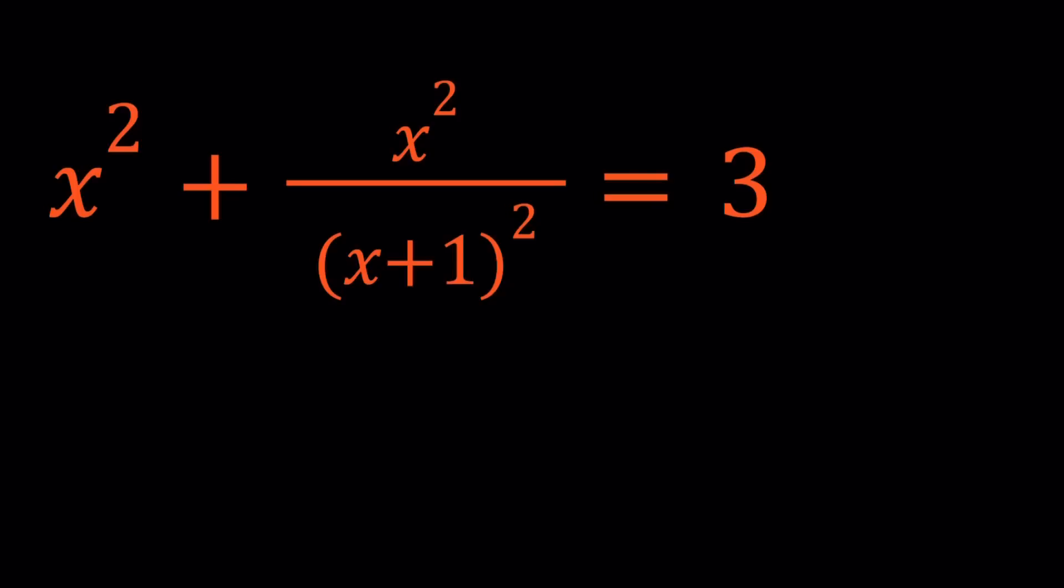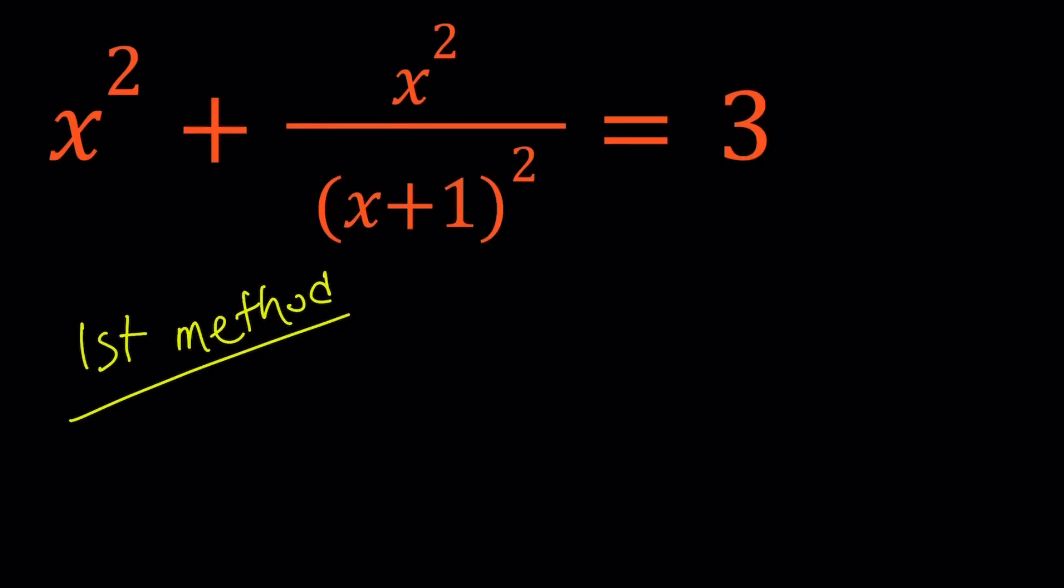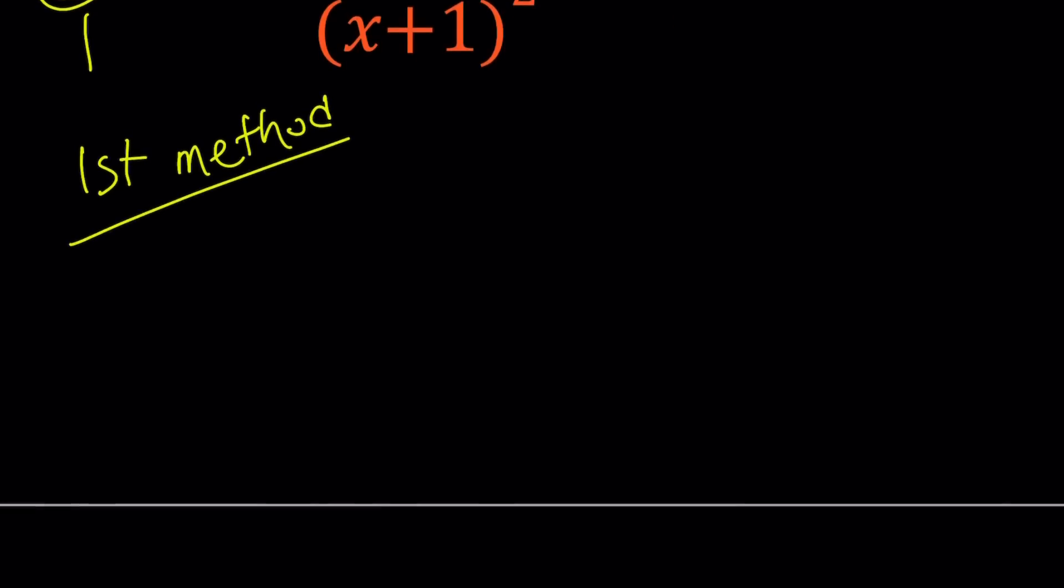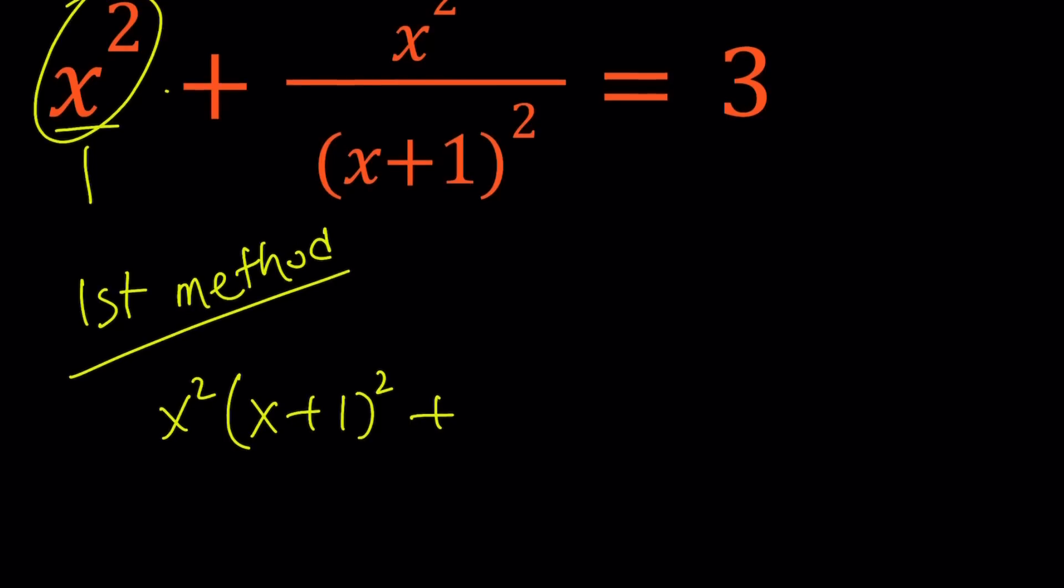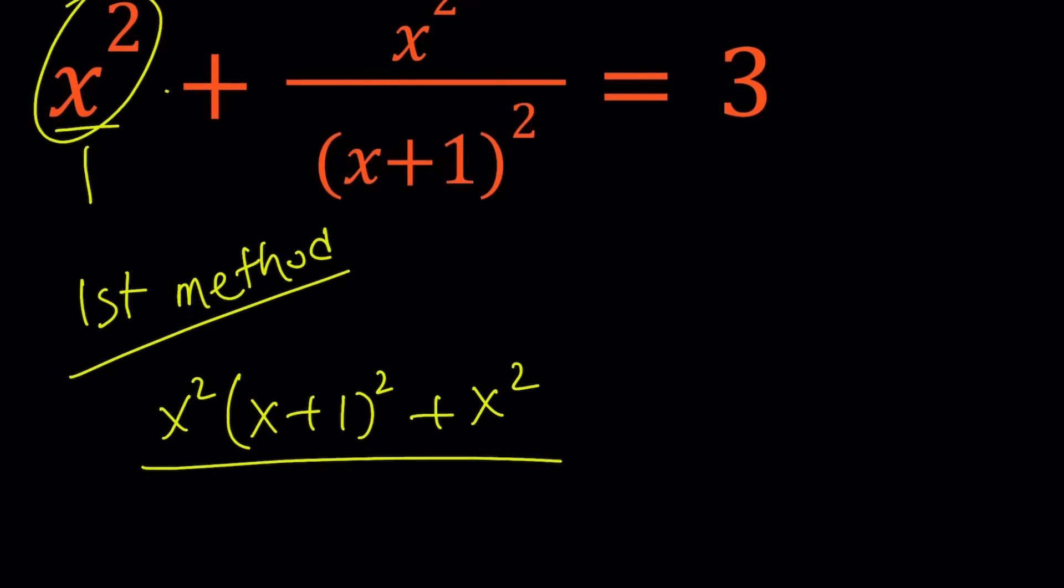Now let's look at it from two different perspectives. First method. For my first method I'm going to make a common denominator and x squared can be written as x squared over 1. So the common denominator is going to be x plus 1 squared. Let's multiply x squared by that and then add the other numerator and divide it by the common denominator.